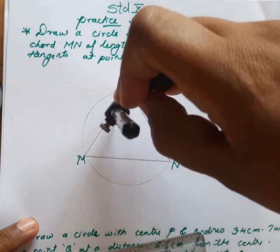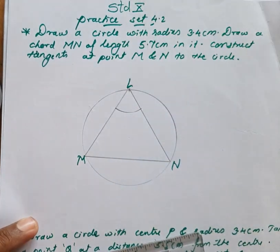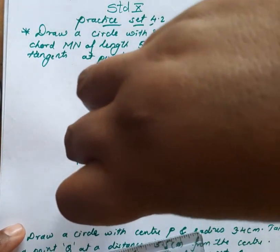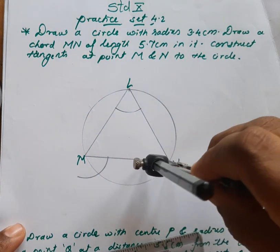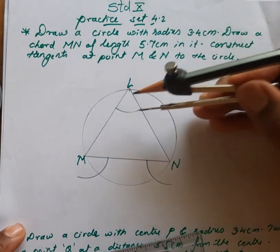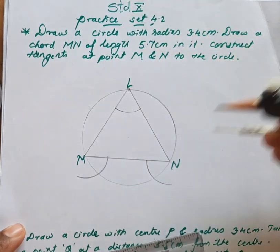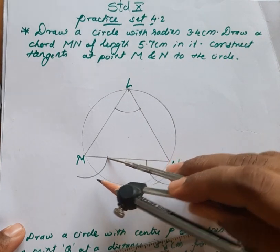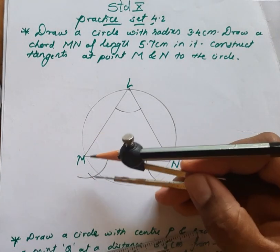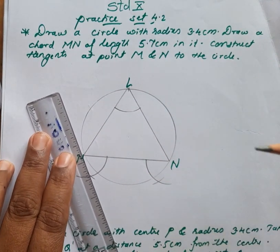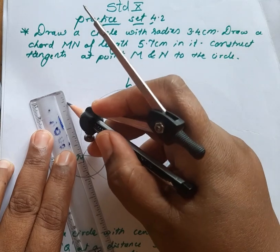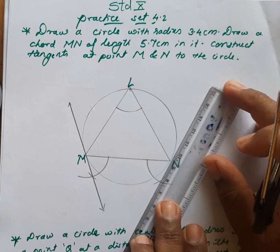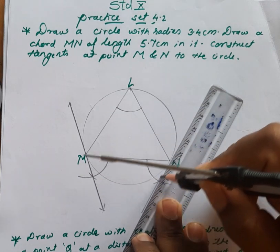Now what we will do — draw an arc inside the triangle from point M, and from the chord we draw the arc outside. See here, draw the arc outside. Now measure this arc and cut the arc from this point. From these two points we will draw the tangent. This is the tangent drawn at point M.